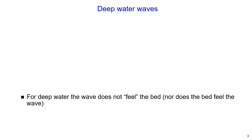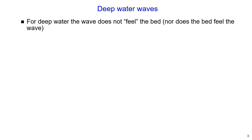For deep water, the wave does not feel the seabed and the seabed does not feel the wave. Deep water waves are defined when the ratio of water depth divided by wavelength is greater than or equal to 0.5.